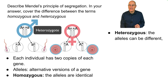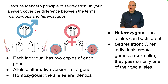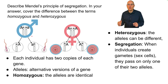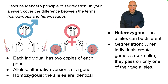In a heterozygote, the alleles can be different. In this individual, one allele is capital A and one allele is lowercase a. The principle of segregation shows what's happening here: when individuals create gametes — their sex cells — they pass on only one of their two alleles. The alleles are together in the parent, but they become segregated or separated during gamete formation.